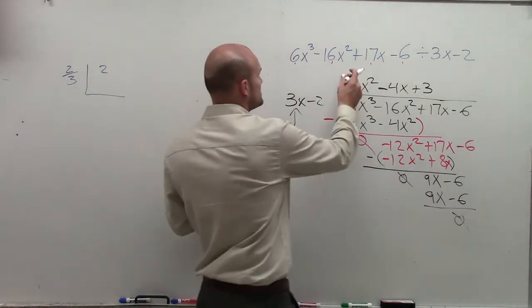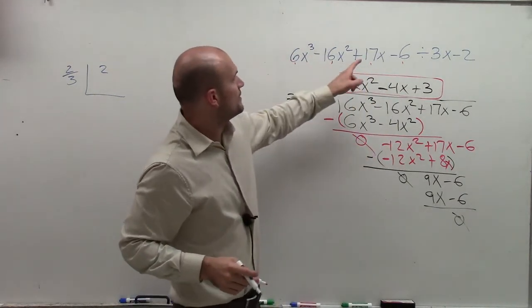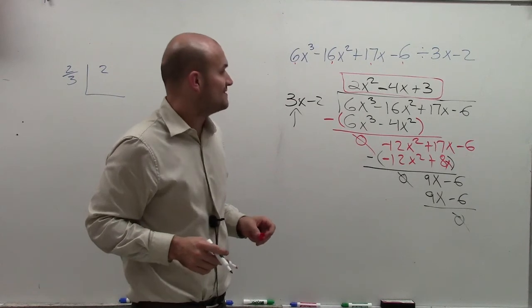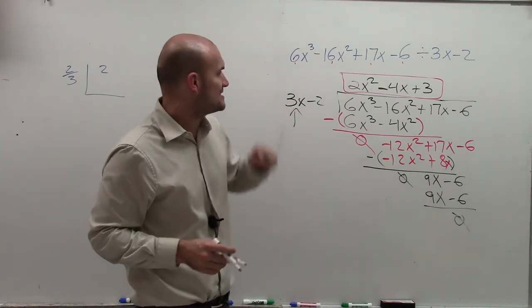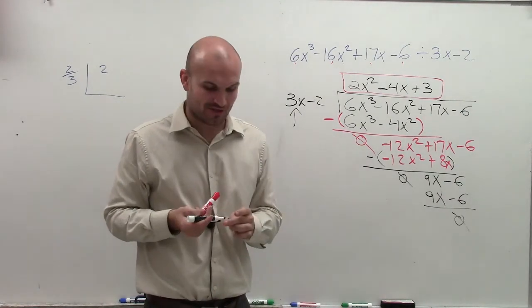So there you go, ladies and gentlemen. Your quotient, or the answer to this problem, is 6x cubed minus 16x squared plus 17x minus 6, divided by 3x minus 2, divides into there 2x squared minus 4x plus 3 times. There you go. Hope you enjoyed. Thanks for watching.